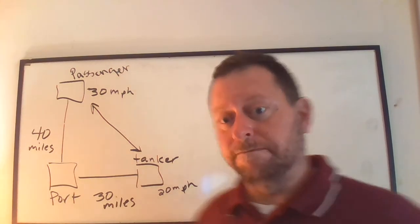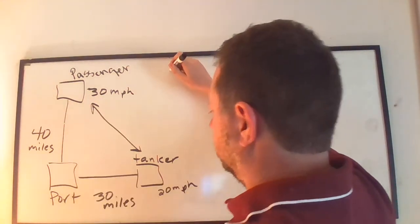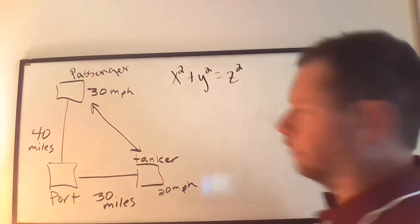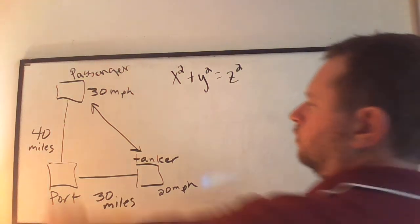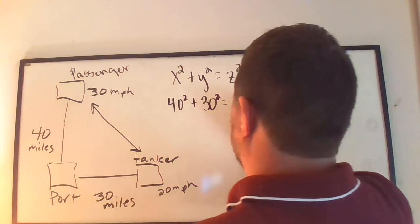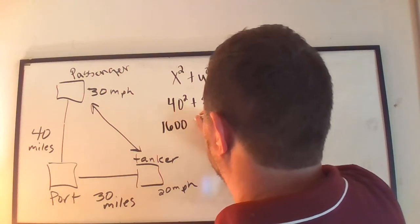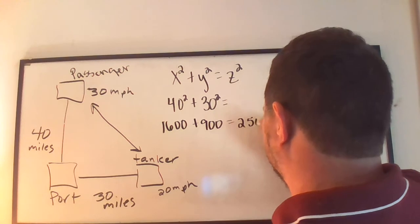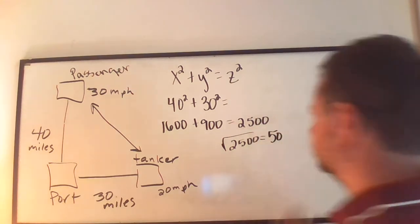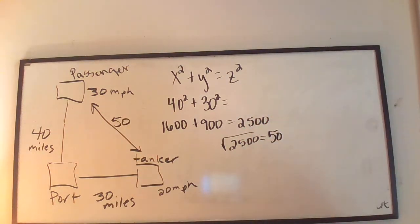Here's what we're going to do. We're going to set this up and first find what is this distance right now. We're going to say x squared plus y squared is equal to z squared. This is 40 squared and this is 30 squared. This is 1,600 plus 900 is equal to 2,500. The square root of 2,500 is equal to 50. So 50 is equal to the distance between these two ships right now at 12 o'clock.